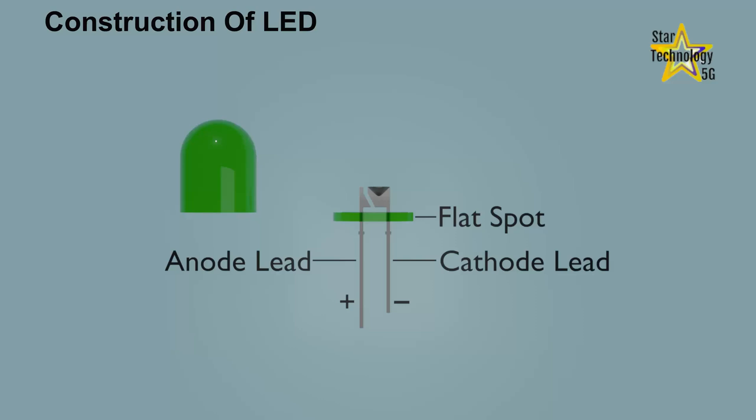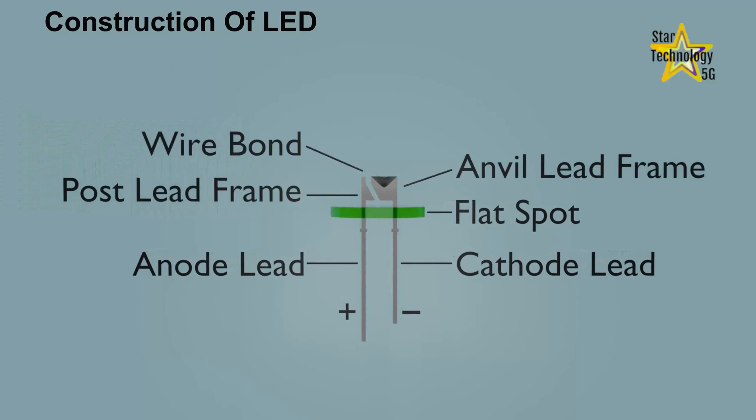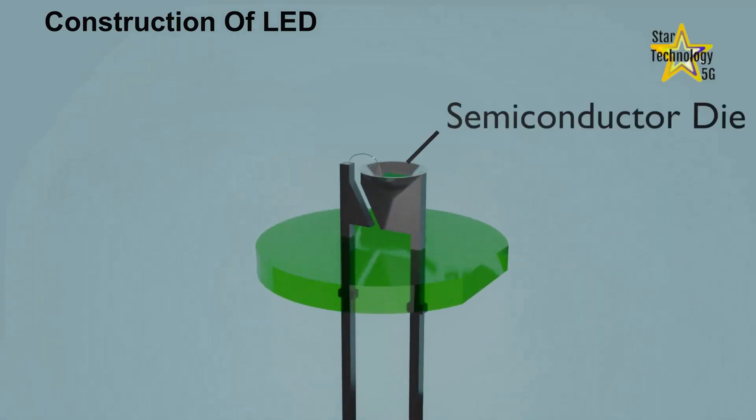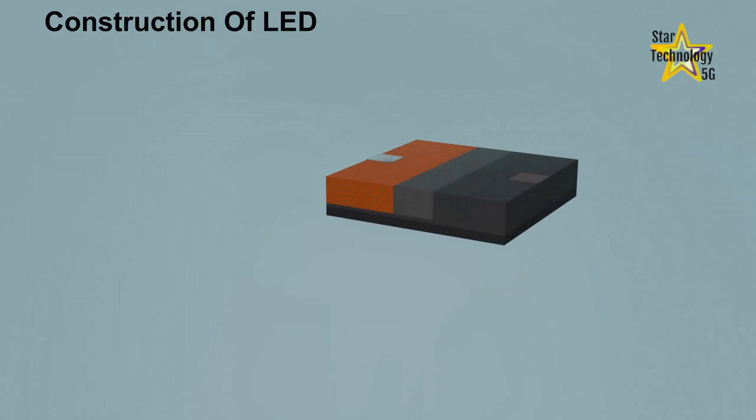If we remove the lens case, the cathode side is called anvil lead frame. The anode side is called the post lead frame. This is wire bond. It gives positive supply to the semiconductor die. This is called a reflective cavity. This is semiconductor die. A semiconductor die is made of three layers on the substrate. As you can see in the 3D model.